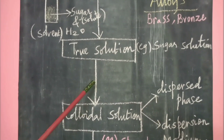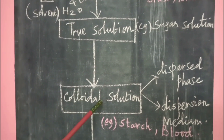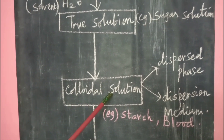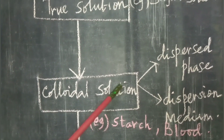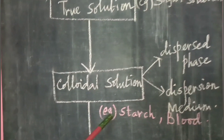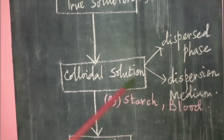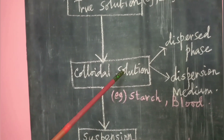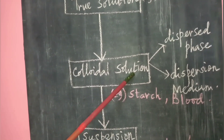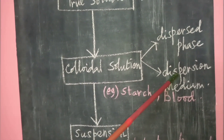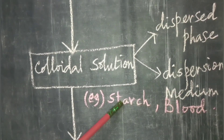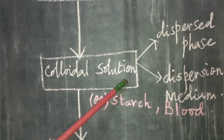In heterogeneous mixtures, there are two types: colloidal solution and suspension. A colloidal solution is a heterogeneous mixture of two or more substances with a dispersed phase and a dispersion medium. Examples include milk powder in water, starch, and blood. In milk powder, small particles are distributed — this distributed phase is called the dispersed phase, and the medium in which the colloidal particles are scattered is called the dispersion medium. You can see a cloudy mixture, which is called a colloidal solution.